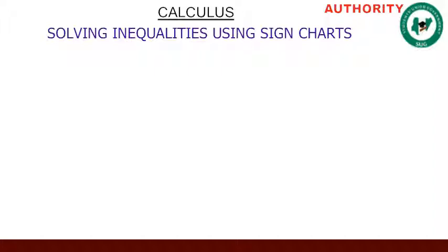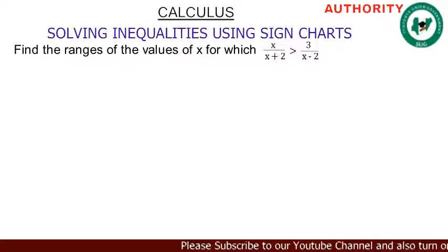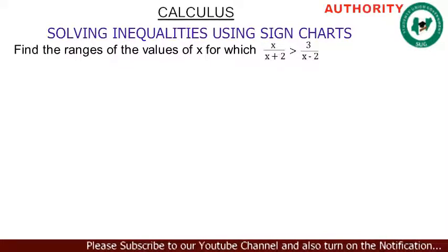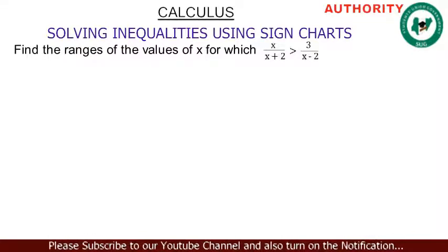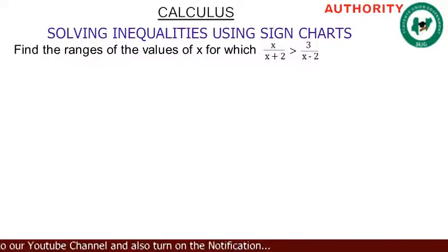Alright, welcome again. We are still on calculus, solving inequalities using sign chart. The problem is: find the range of values of x for which x over (x+2) is greater than 3 over (x-2).